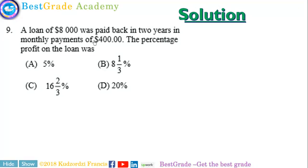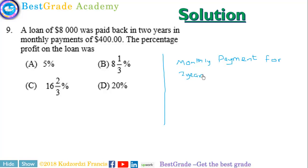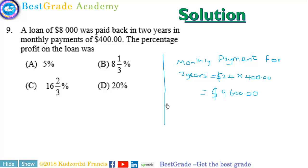In number 9, we have a loan that was paid back in 2 years in monthly installments of $400. We need to calculate the total amount paid. 2 years is equivalent to 24 months. So 24 times $400 gives us $9,600. The actual loan amount is $8,000.